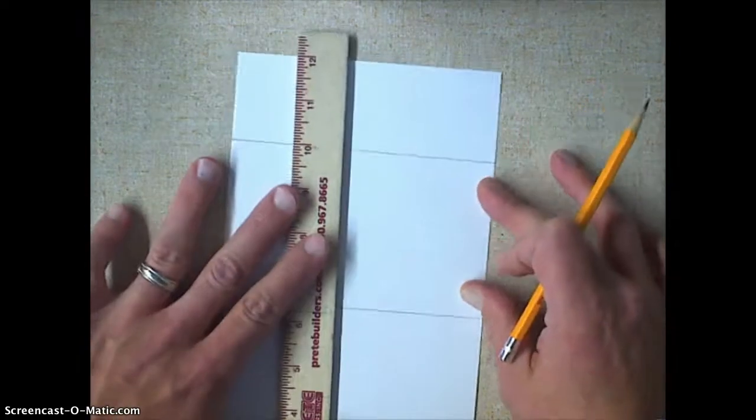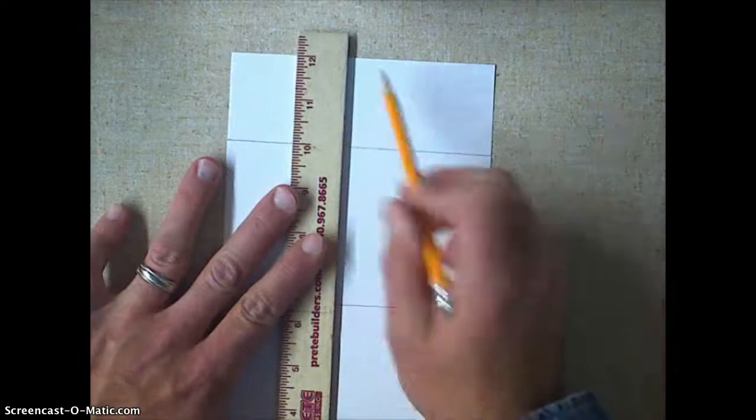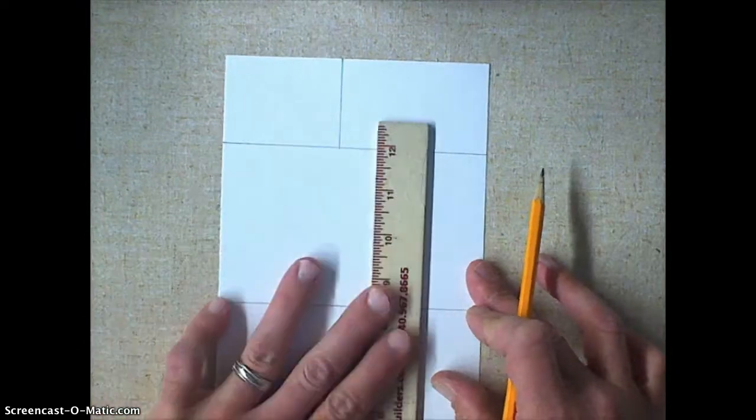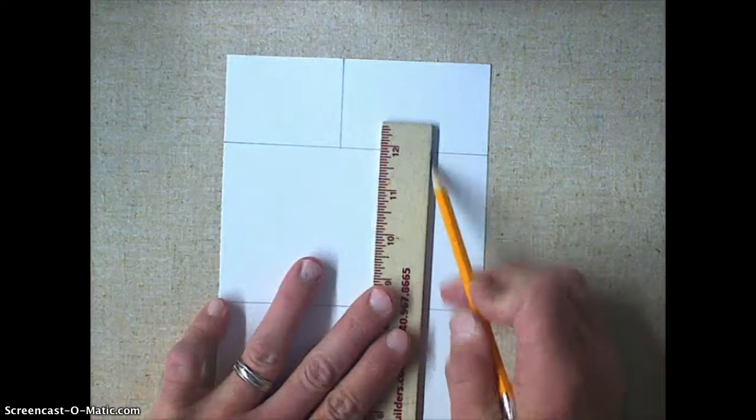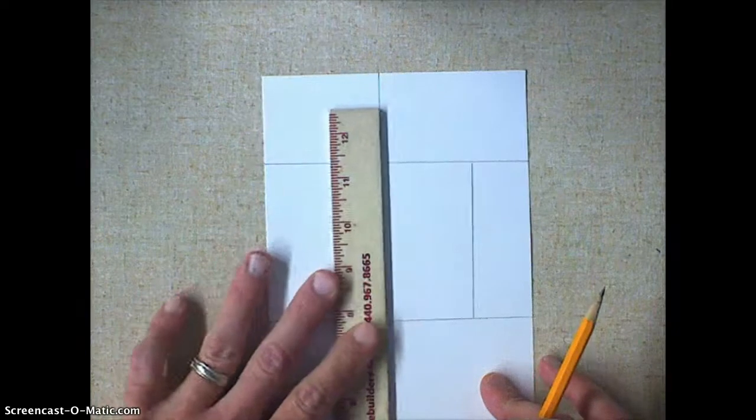And now I'm going to make three horizontal lines. So I'm going to make one here, one here, and one right here.